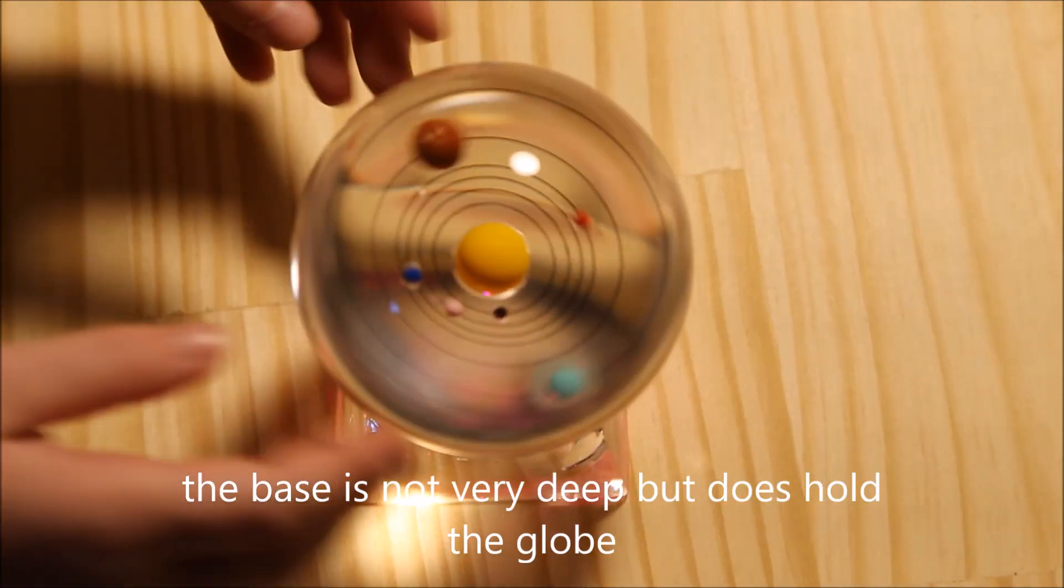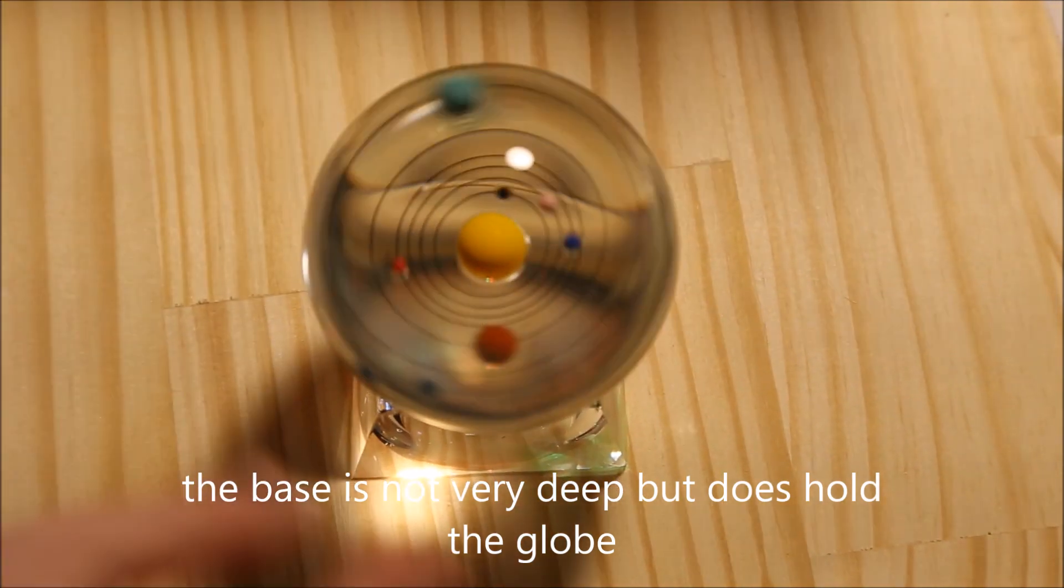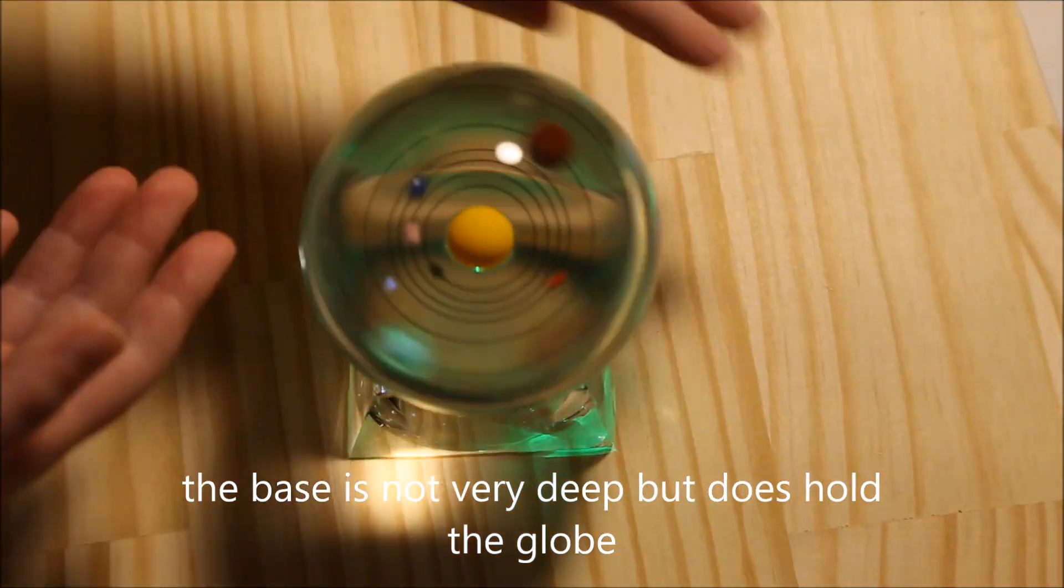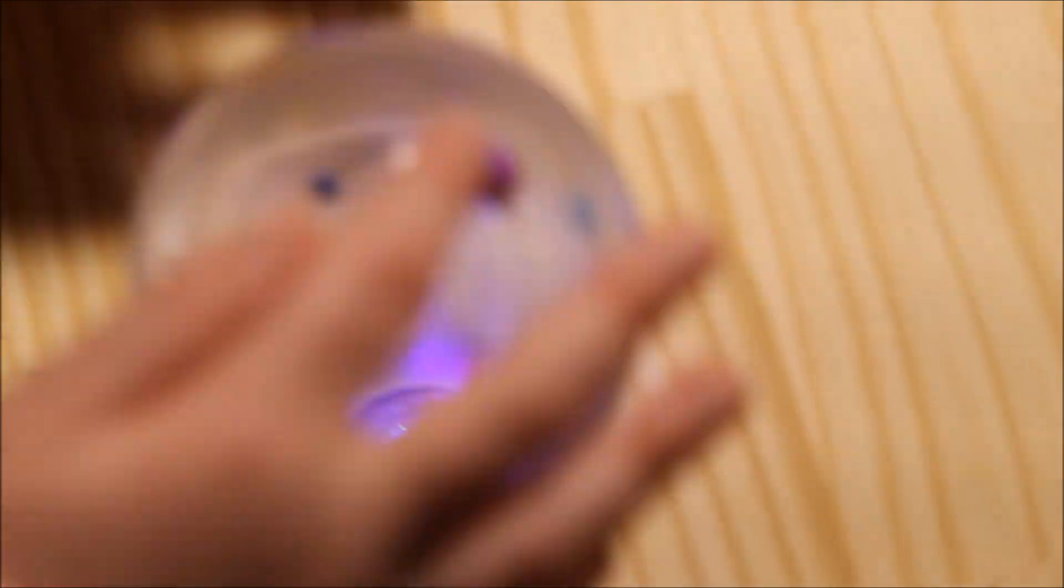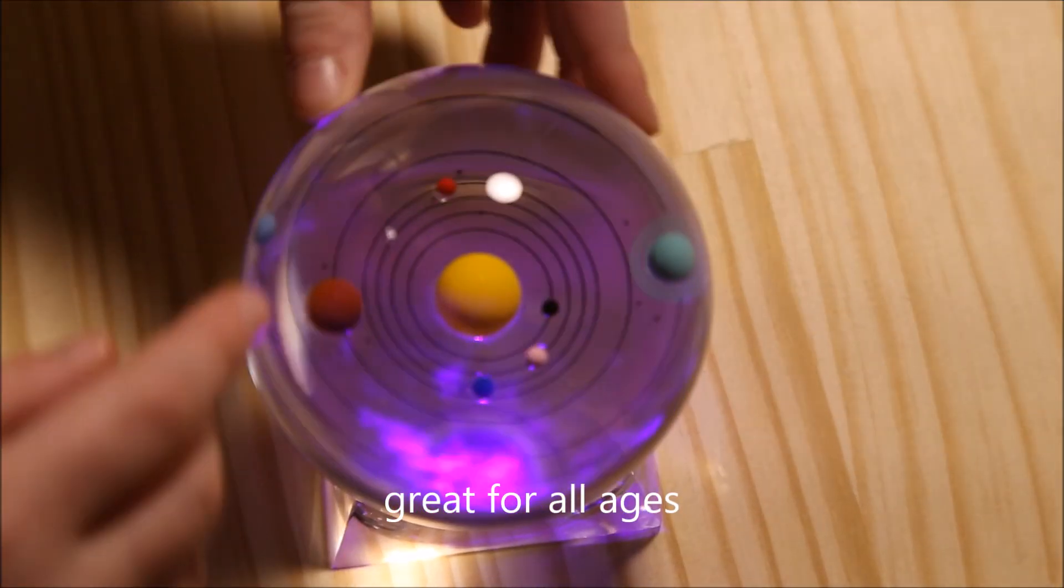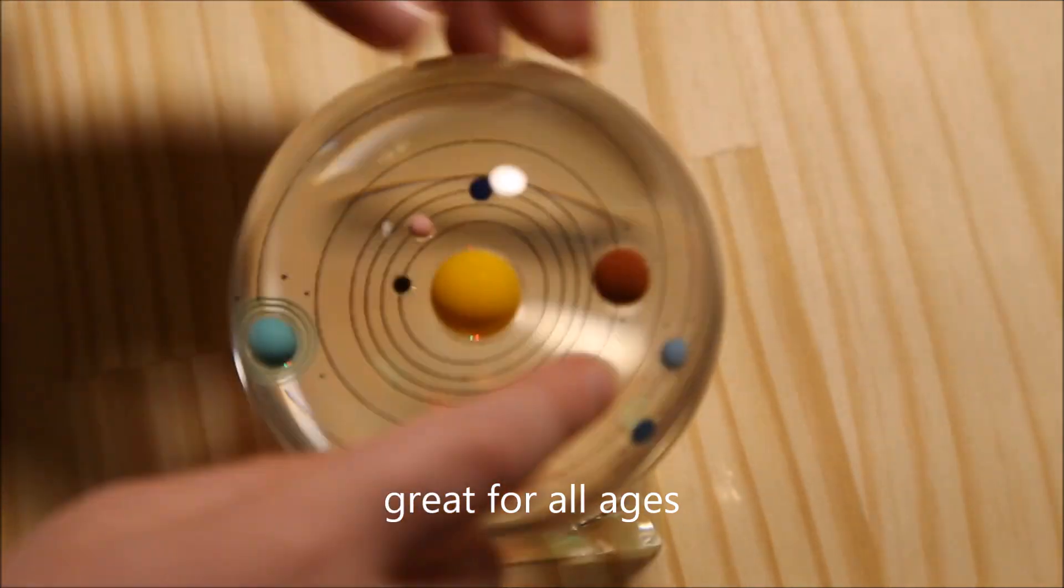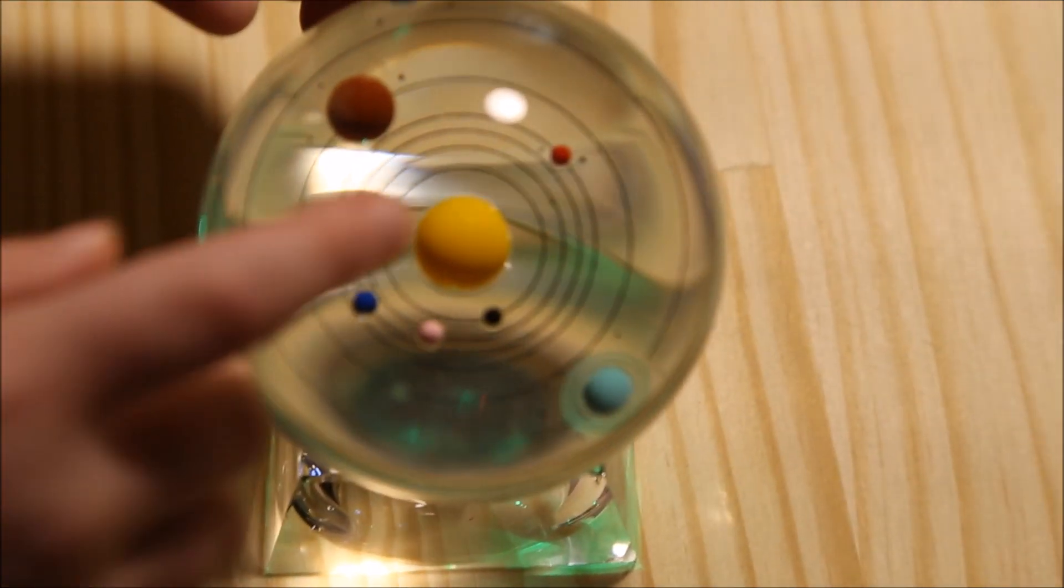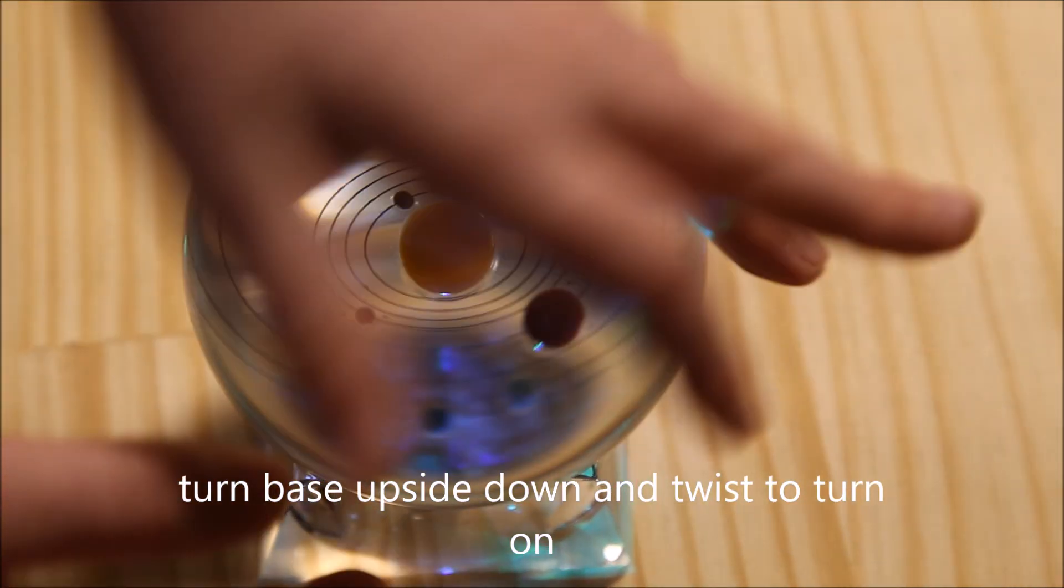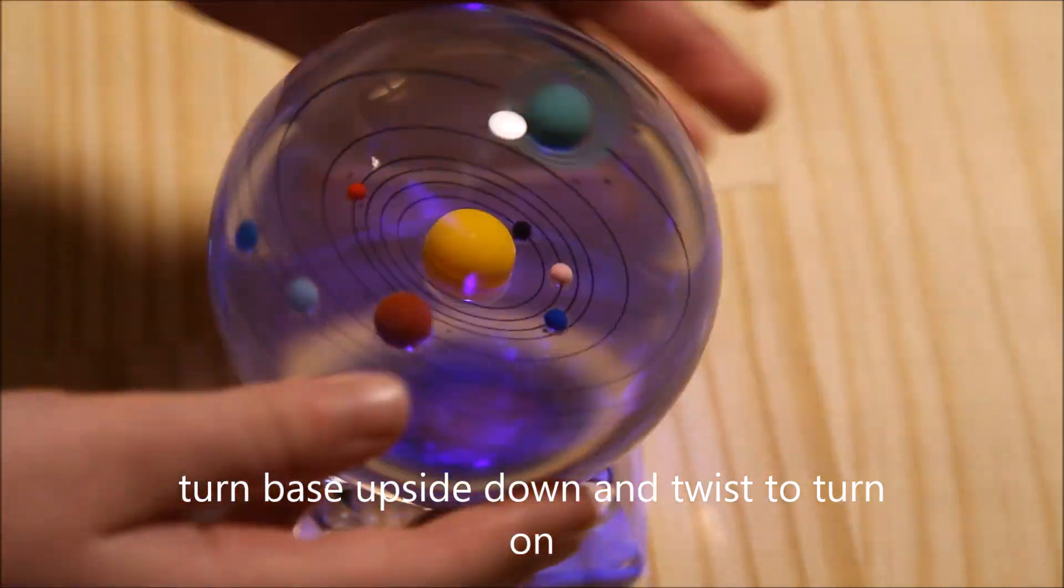It lights up on the ceiling and then I can spin it and then it shows all the planets. No Pluto, just the Sun, the Earth, Mars, and a couple more planets.